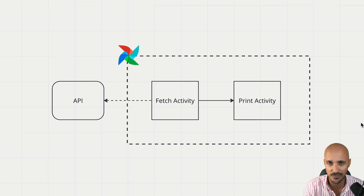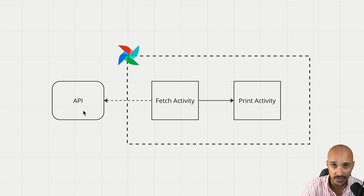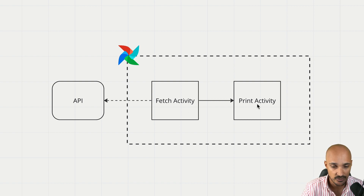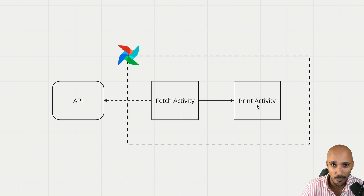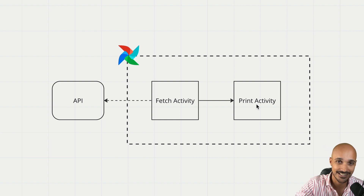At this point, you have an Airflow instance running on the cloud. Now we will create the following data pipeline — a simple one with two tasks: one that fetches an activity from the Bored API, which returns a random activity on each request, and one that prints that activity to standard output. We will create this data pipeline in a way you probably haven't done before, and deploy it through a CI/CD pipeline.